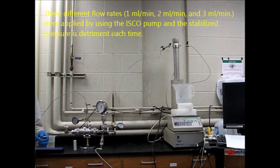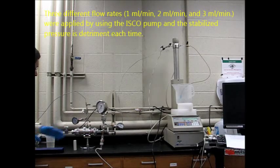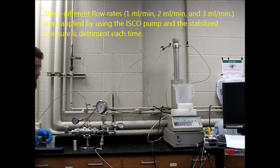Three different flow rates—1 milliliter per minute, 2 milliliters per minute, and 3 milliliters per minute—were applied using the ISCO pump. The stabilized pressure is determined each time using the pressure gauges.